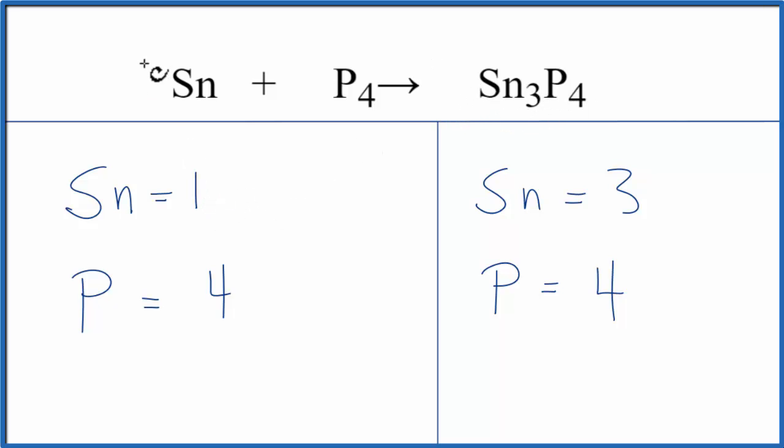So if I put a 3 in front of the Sn, I have one of these times 3, that would give me three tin atoms, and these would be the same. The phosphorus, they don't change, they're the same, we're done.